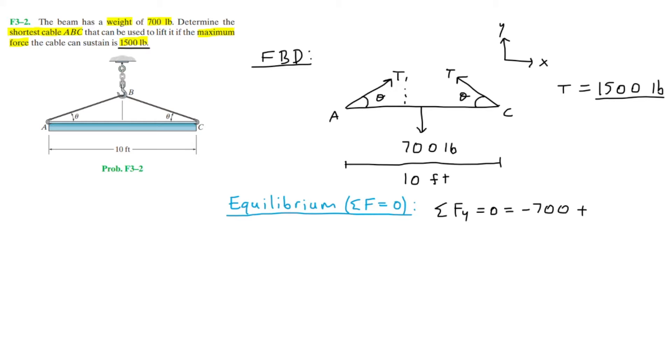Completing the right triangle, this is T_y. I'm just going to redraw the right triangle over here. Here we have theta, and then the x and y components, as well as the value of the force, 1500, on the hypotenuse.